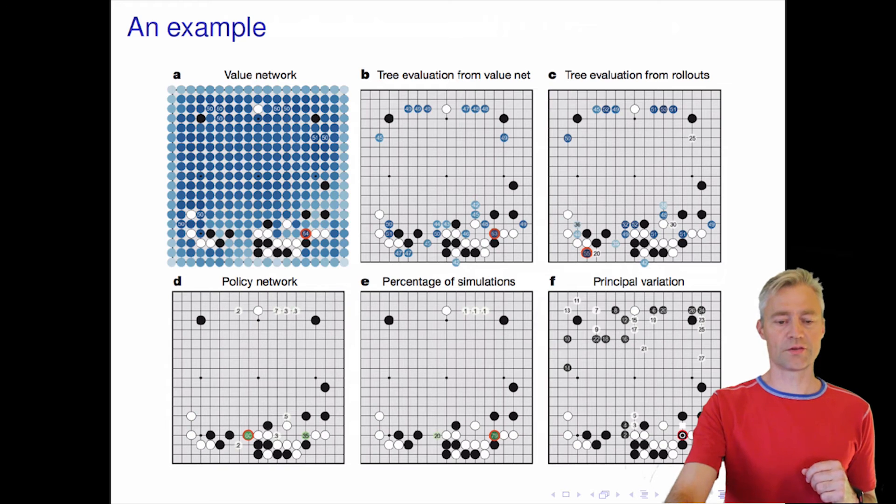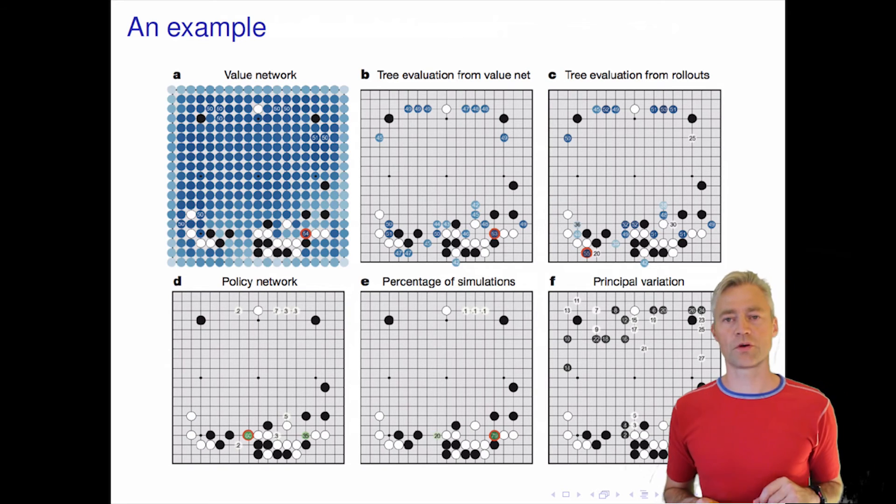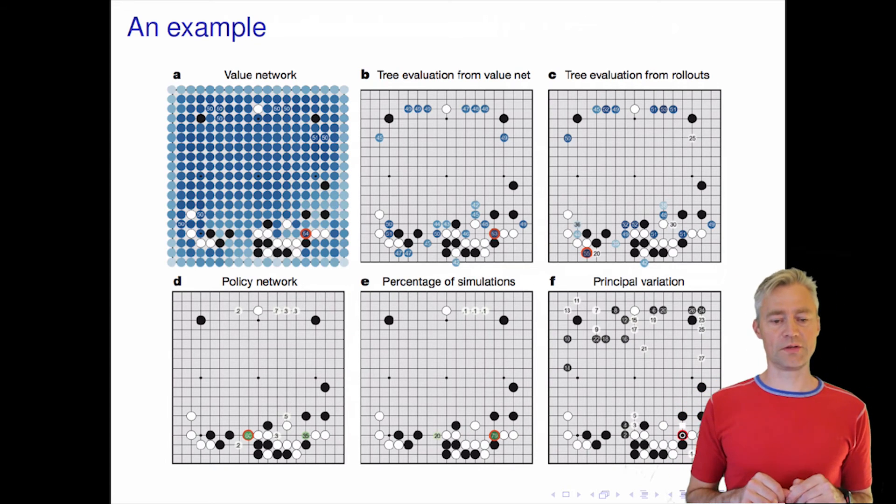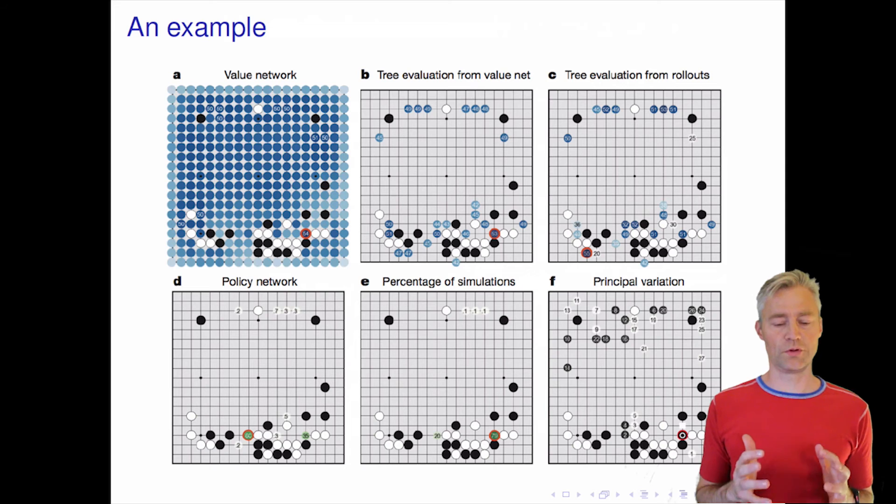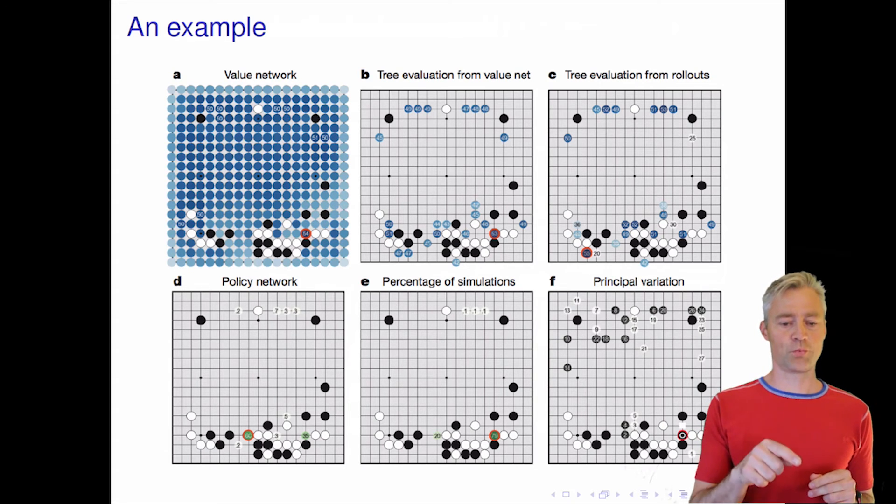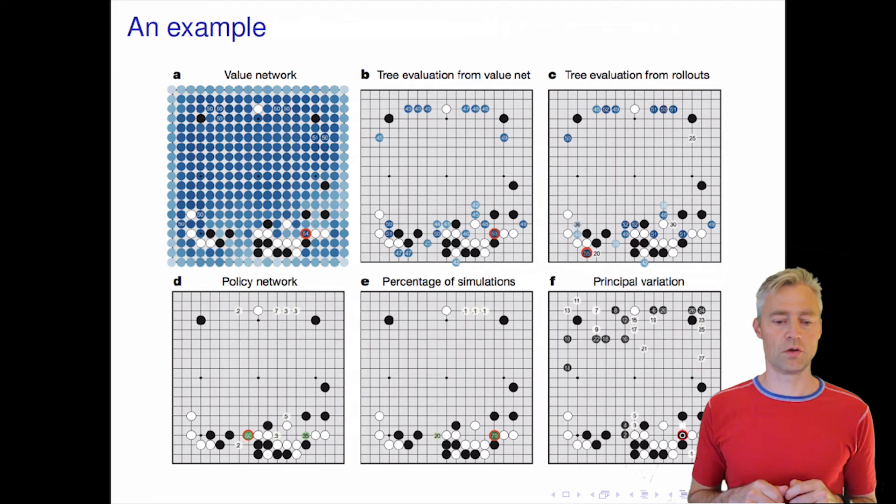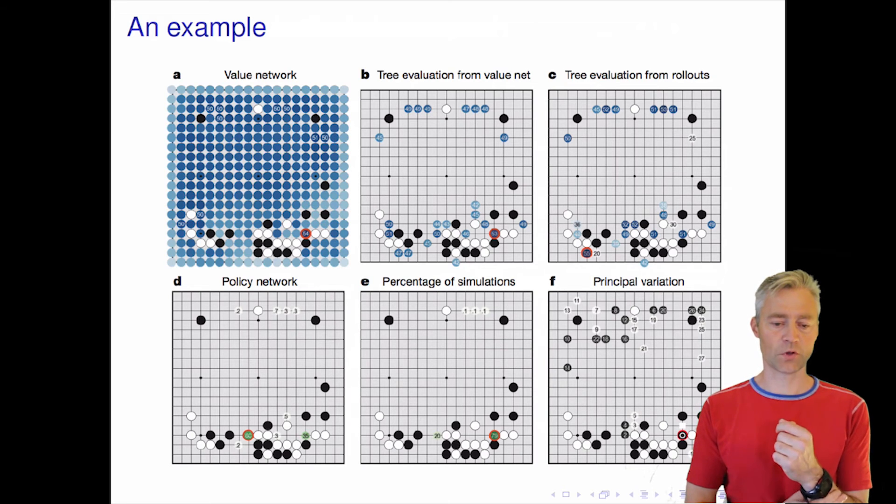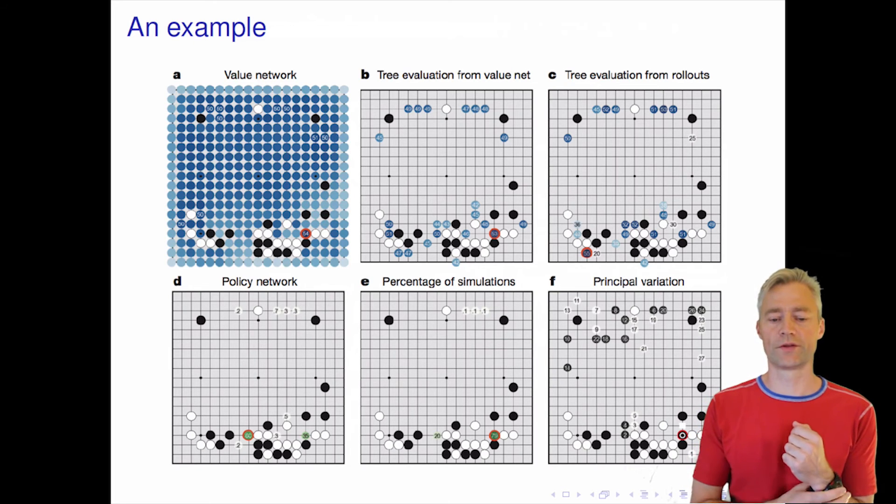Here's an example at the end. You can see in the A subplot we see a certain position, and we can see now that the reinforcement learning value network puts different probabilities of winning depending on where you put your next piece. It's black's turn to move. The value network assigns a probability of 54% of winning if you put your piece on this position with the red circle.